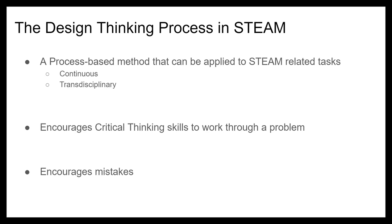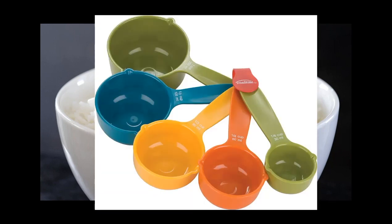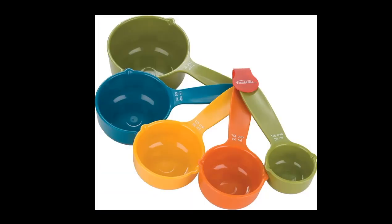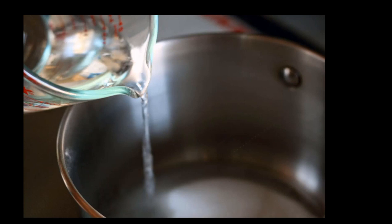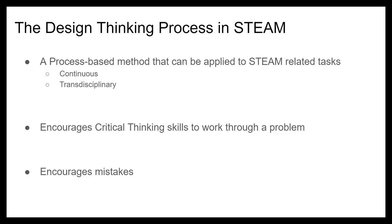For example, you use both STEAM related ideas and the design thinking process while you are cooking. You may be boiling rice, so first you have to decide what your strategy is, get the necessary materials, cook the rice, and then evaluate it to see what you could improve for next time. Maybe you realize that it's overcooked, but now you are aware to not let it boil for so long. You want your STEAM product to reach the most successful outcome it can, and with the design thinking process and an abundant amount of trial and error, those conclusions can be reached.